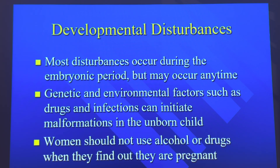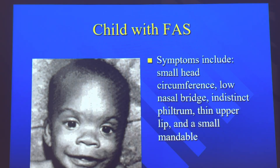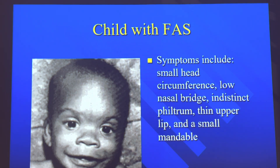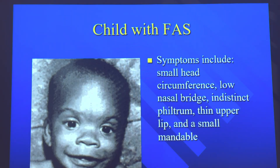Women should not use alcohol or drugs when they find out they are pregnant. This is a child with FAS, which stands for fetal alcohol syndrome. This syndrome includes a small head circumference, a low nasal bridge, indistinct philtrum, thin upper lip, and a small mandible.